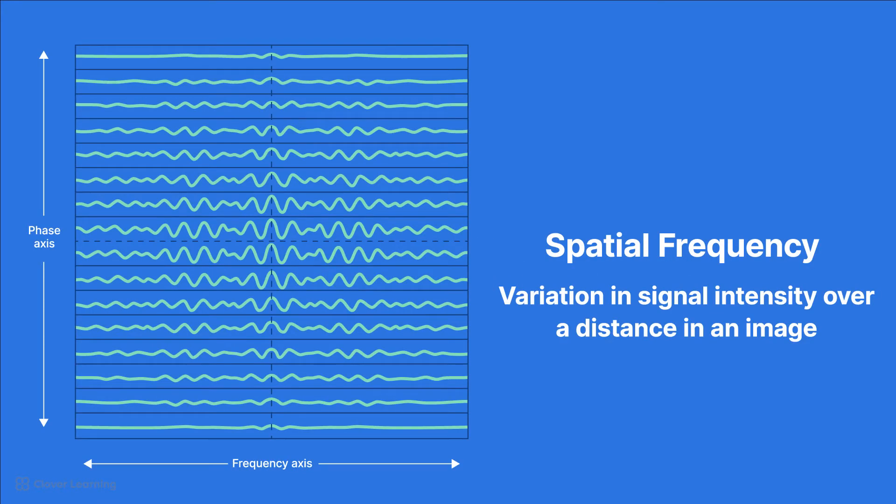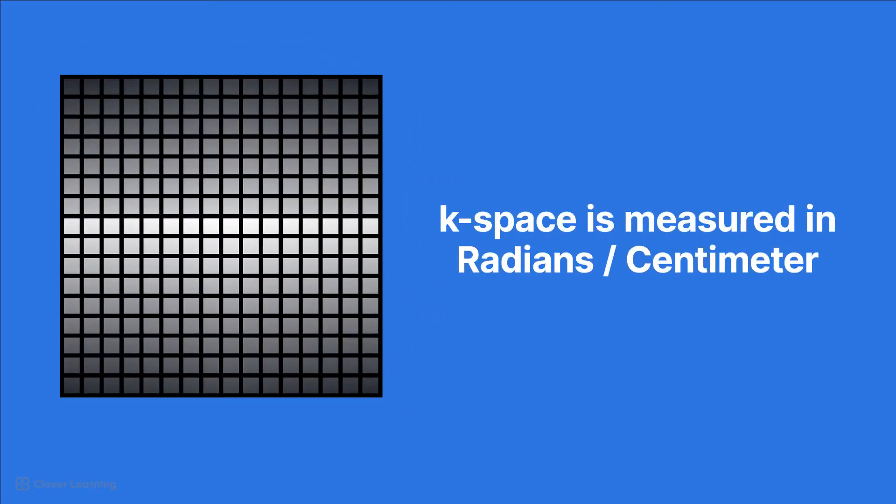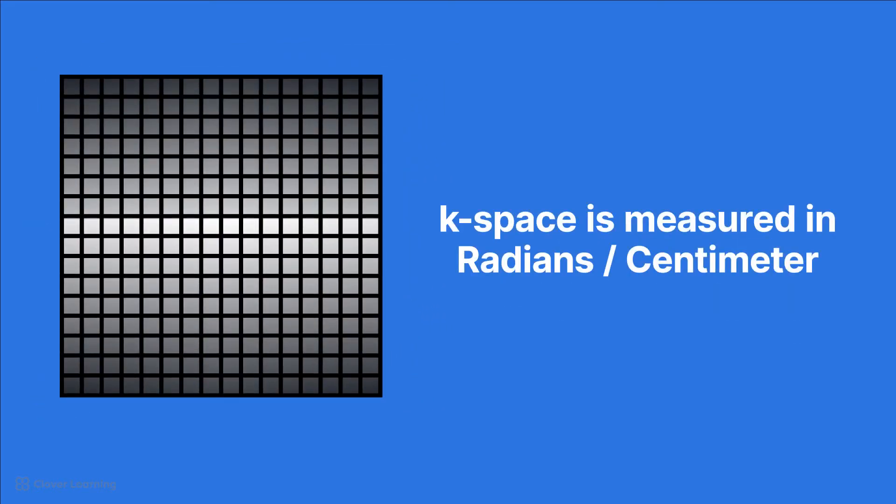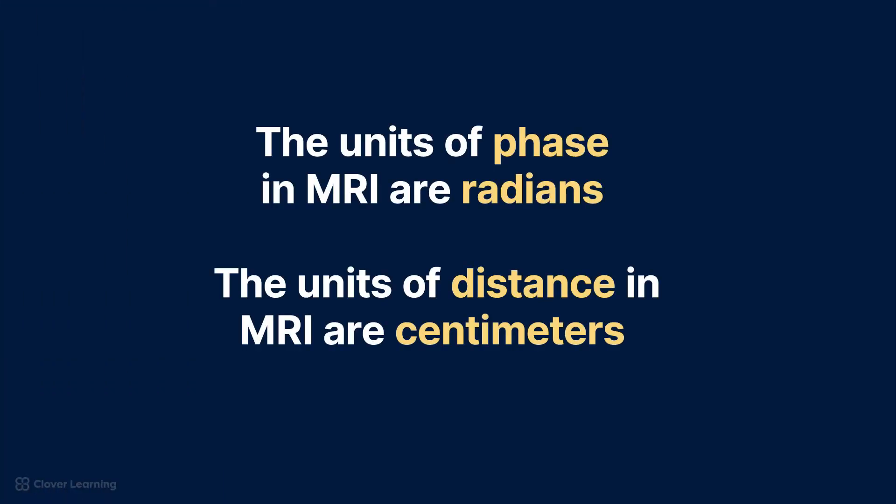Spatial frequency refers to the variation in signal intensity over a distance in an image. K-space is measured in radians per centimeter. This is because, in k-space, spatial frequency is represented as a phase change over distance. The units of the phase in MRI are radians, and the units of distance in MRI are centimeters.